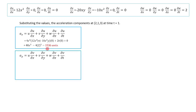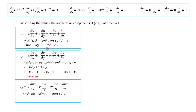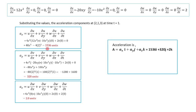Likewise for the acceleration component in the y direction: substituting the values, we get ay = 320 units. Similarly in the z direction the value is az = 2 units. Using these we can write the acceleration vector as 1536i plus 320j plus 2k.